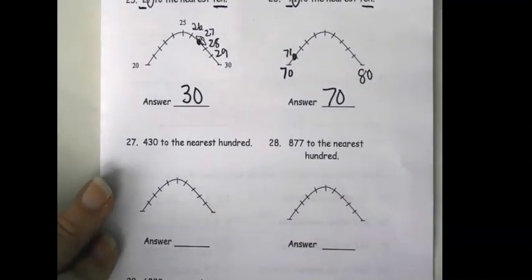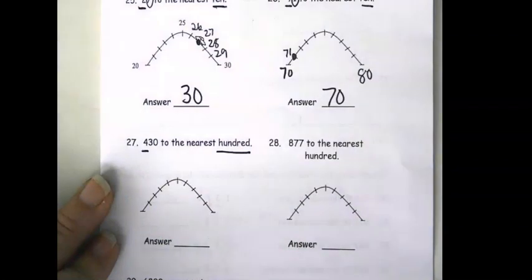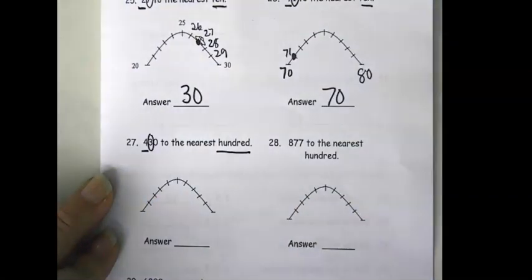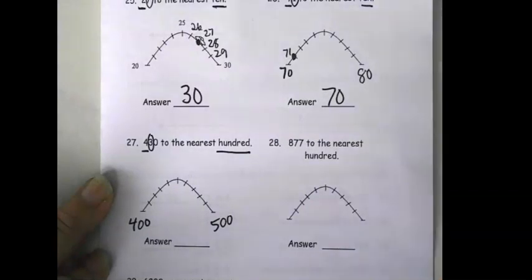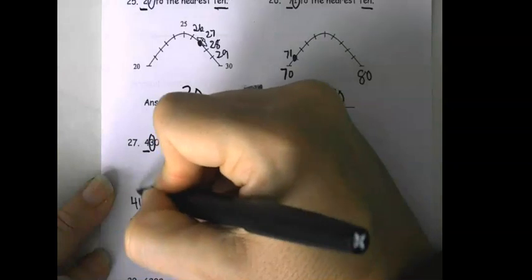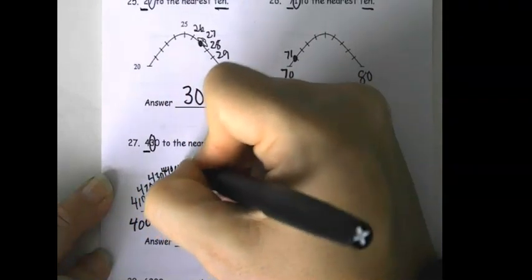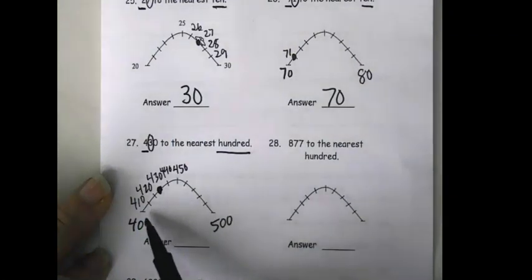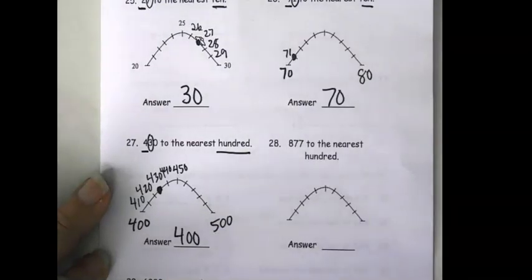Now we're rounding to the hundreds. This says 430 to the nearest hundred. I'm going to underline the hundreds place. And this time, I'm going to be using the tens place to make my decision. So, we're going to use the 3 to decide, is it closer to 400 or 500? So, we'll skip count by tens. This is 410, 420, 430, 440, 450, and so on. So 430 is my number, it's right there. That would go back down. So, 430 is closer to 400 than it is to 500, so we're going to round down to 400.